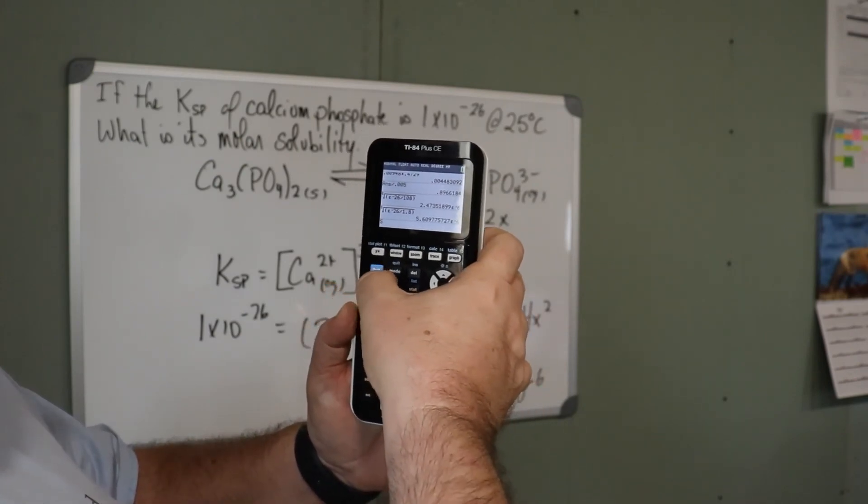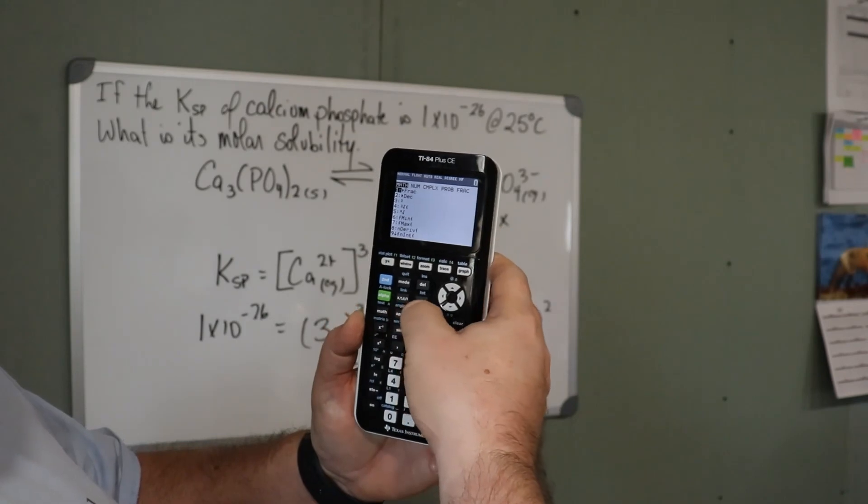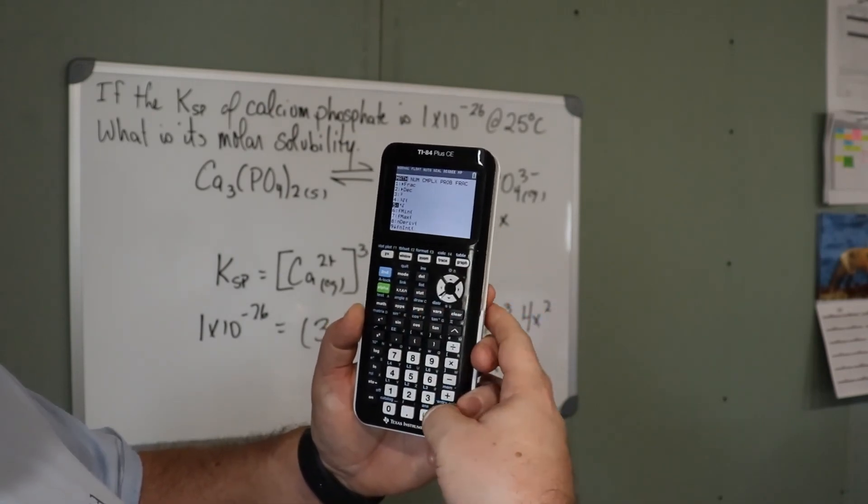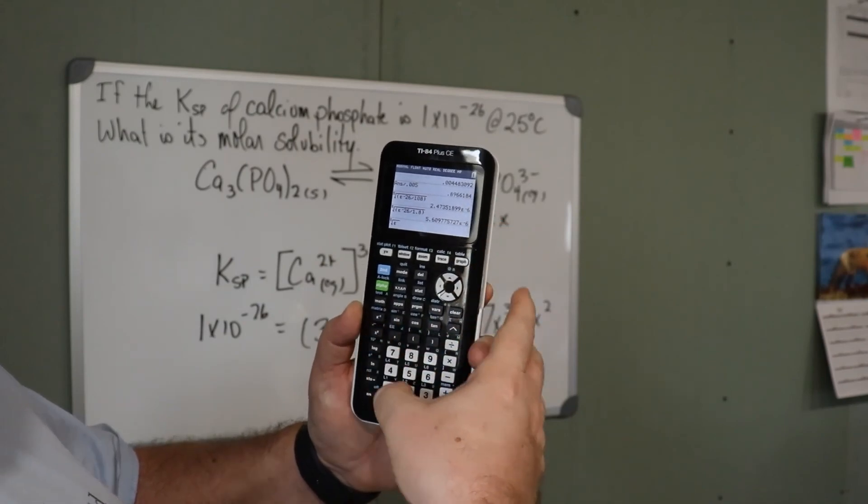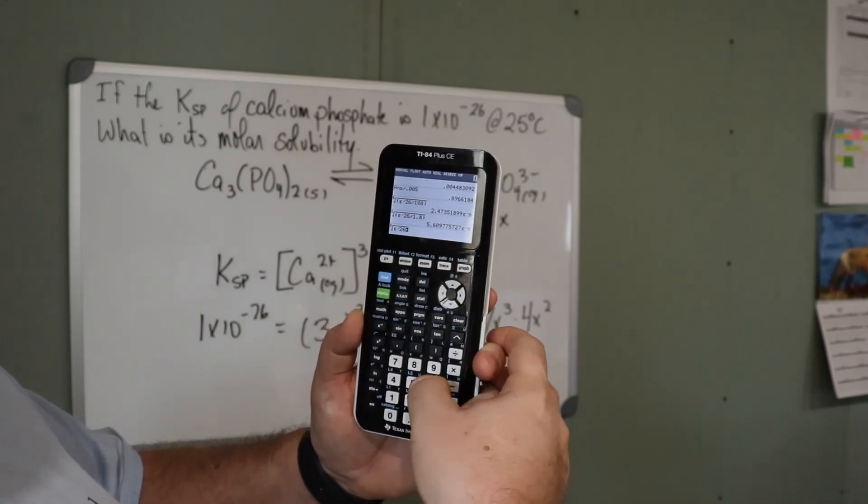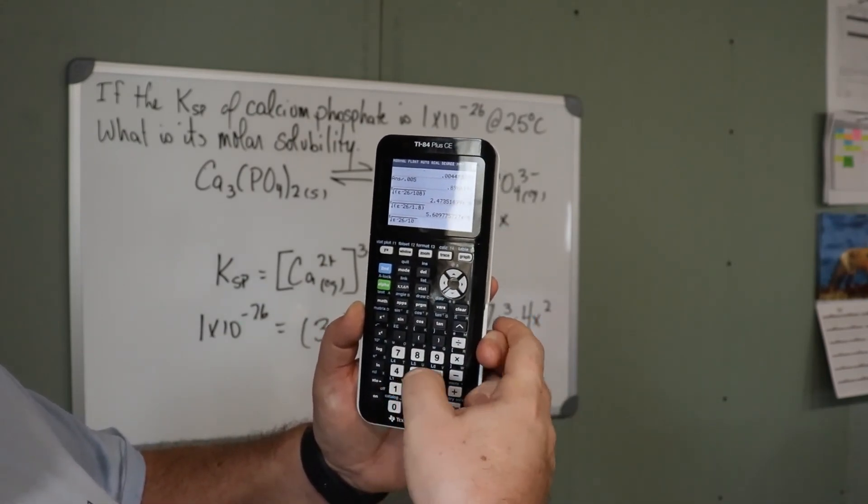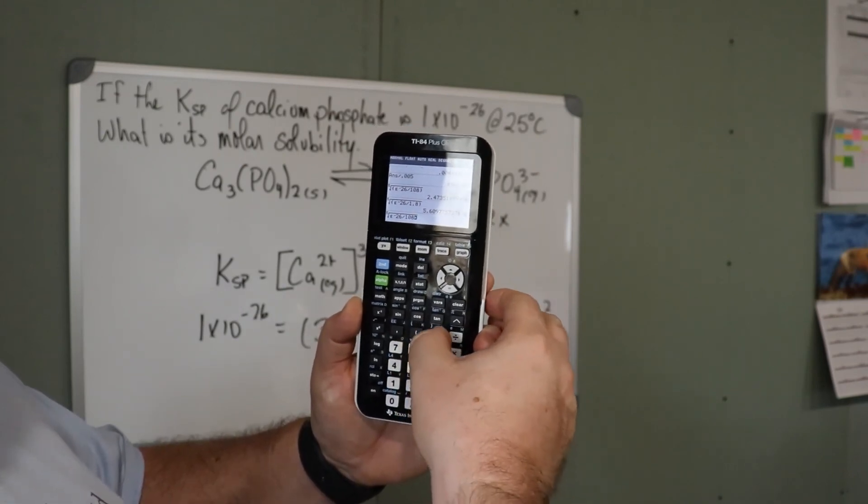Fifth root, so 5, math, X root. Second function, EE, negative 26 divided by 108. Close the bracket.